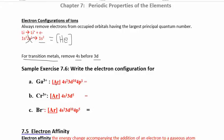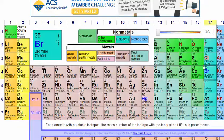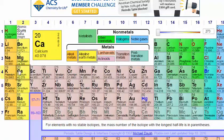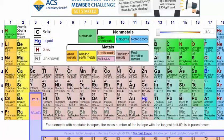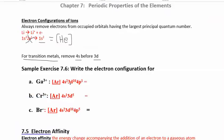Let's look at gallium 3+. Start with the neutral atom: gallium's condensed electron configuration is [Ar] 4s², 3d¹⁰, 4p¹. To form Ga³⁺, we remove three electrons — first the 4p¹, then both 4s electrons. The 3d¹⁰ is a full d block, which counts as core electrons lower in energy than the valence electrons. The resulting electron configuration for gallium 3+ is [Ar] 3d¹⁰.